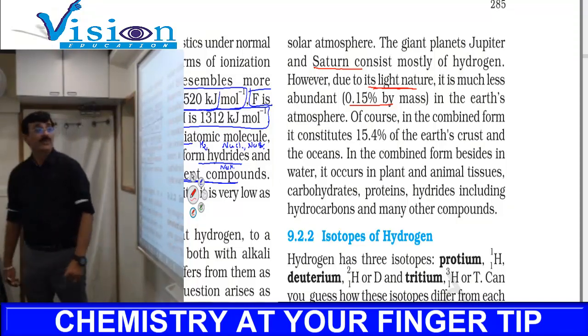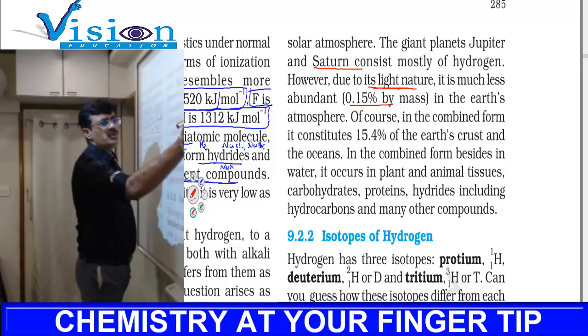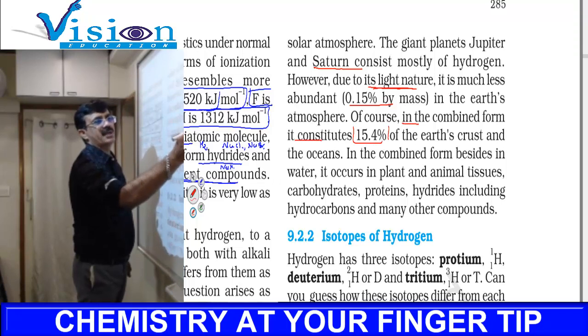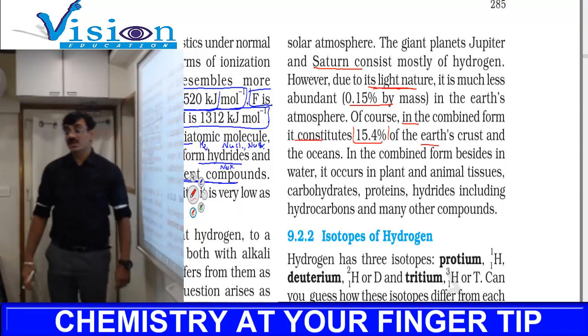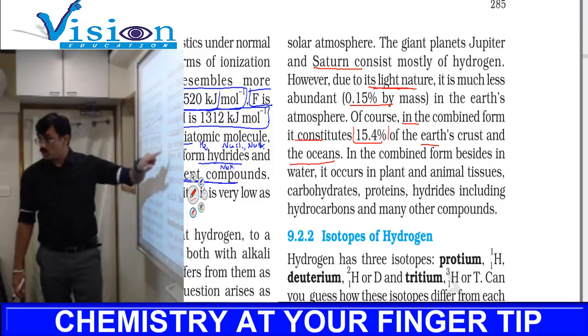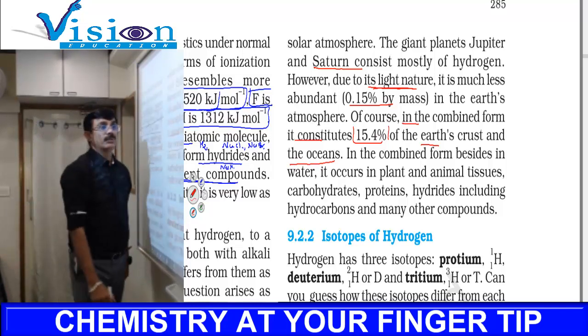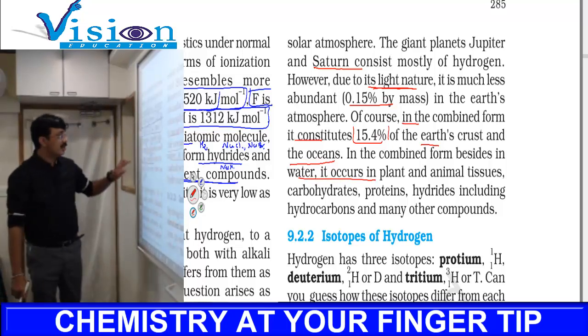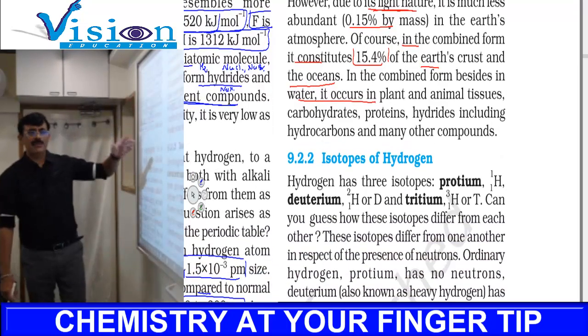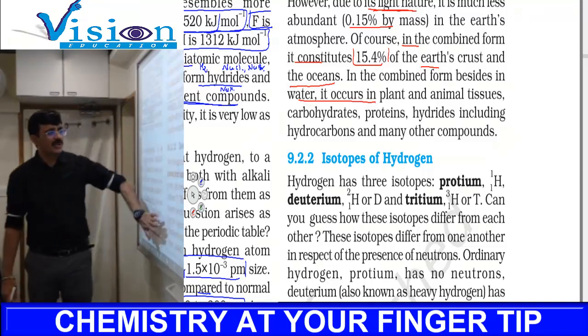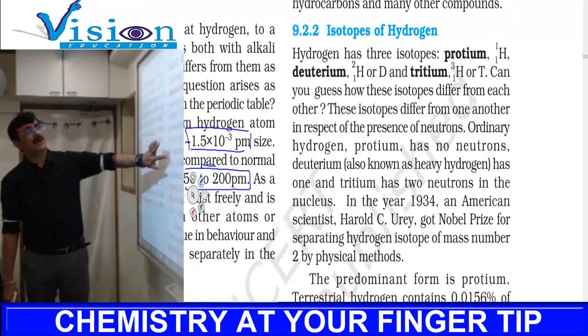However, hydrogen you will get as far as 15.4% in the form of Earth's crust in compound form - in oceans as water, in plant and animal tissue. Every living organism contains carbon and hydrogen, so most of these sources also contain hydrogen.